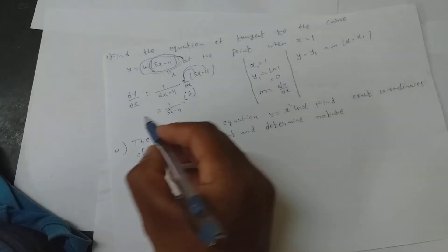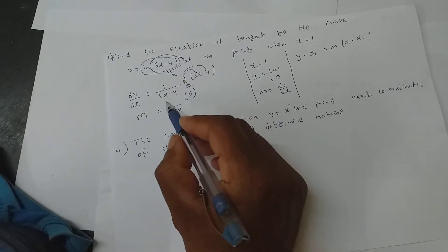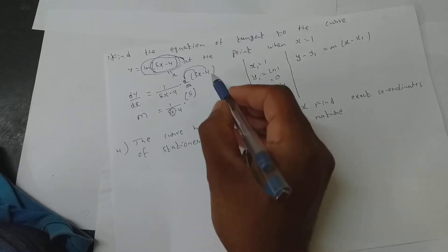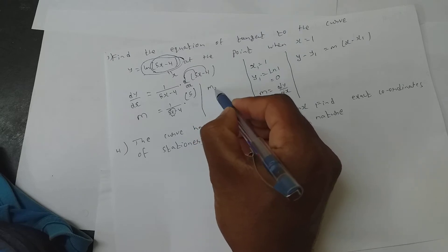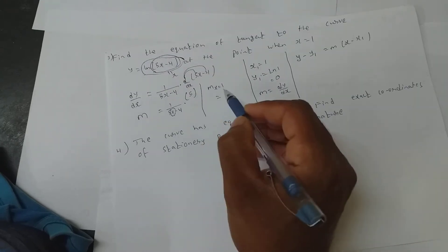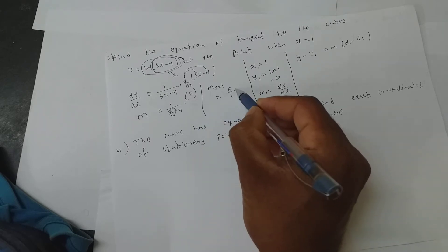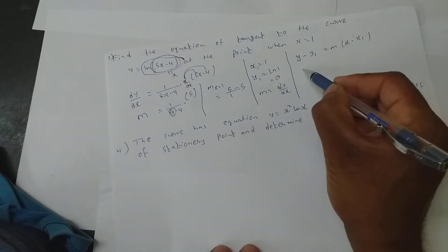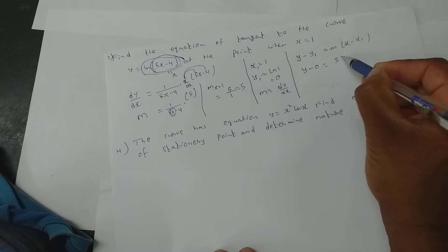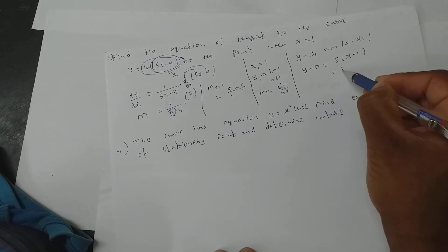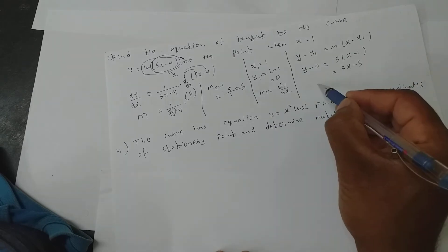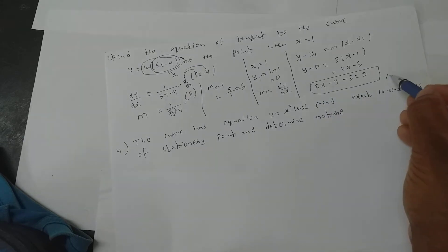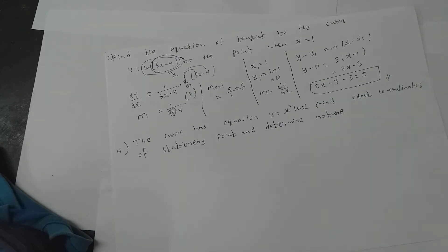Now this is my slope, but my slope should not have x in it. The slope is needed when x equals 1, so replace x with 1. You get 5 by (5 minus 4), which is 5. So the equation of the tangent is y minus 0 equals 5 into (x minus 1), giving 5x minus 5. Taking y to the other side: 5x minus y minus 5 equals 0. That is the equation of the tangent.